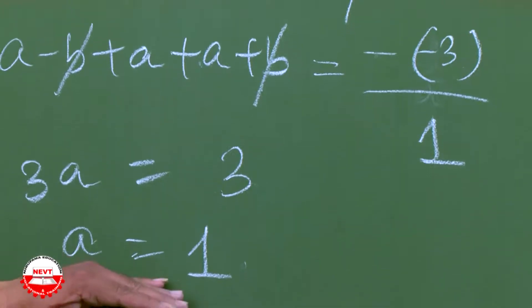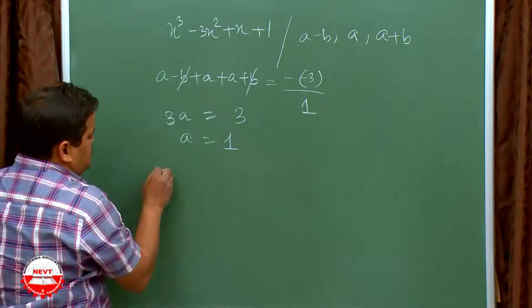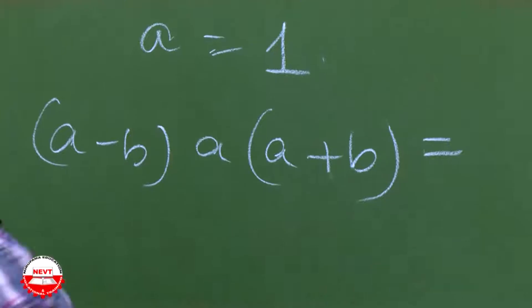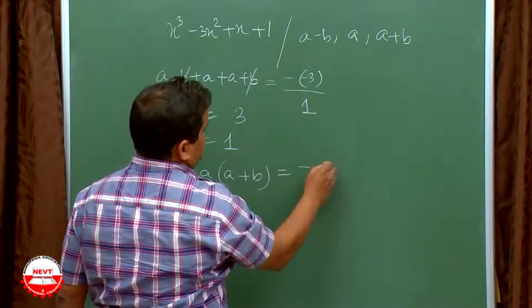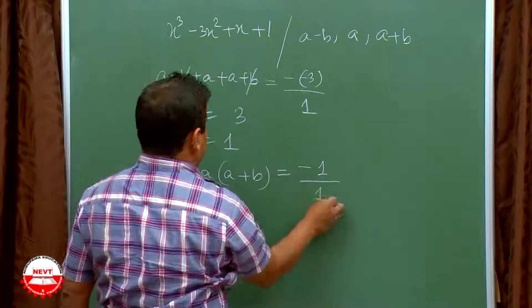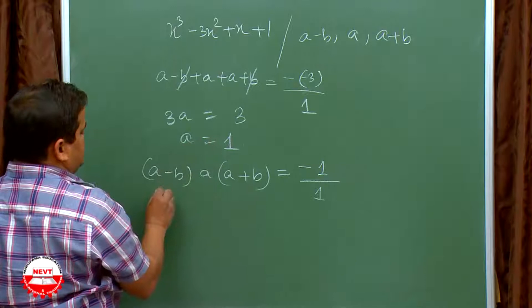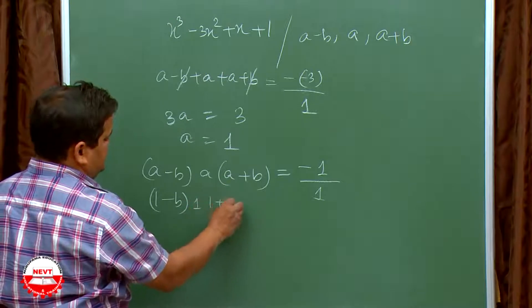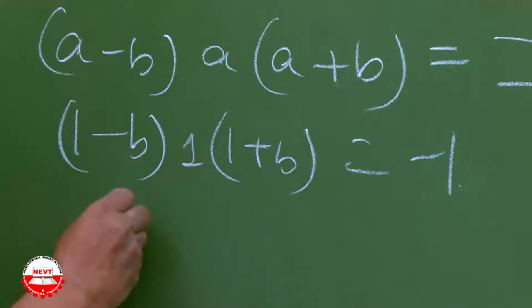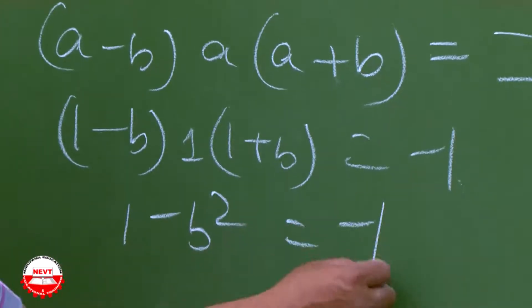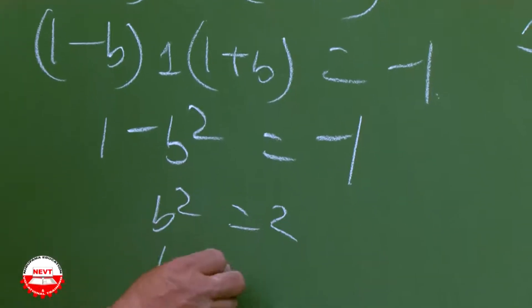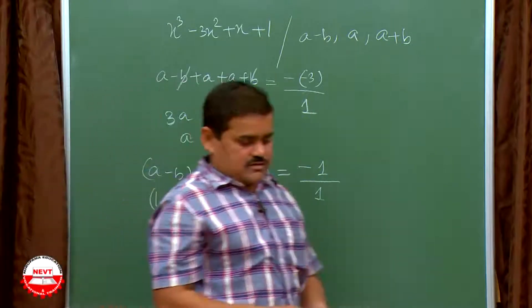You get the value of a as 1. Now product of zeros: (a minus b) into a into (a plus b) equals minus d by a. Minus d means minus 1, divided by a means 1. Substituting a equals 1: (1 minus b) into 1 into (1 plus b) equals minus 1, so 1 minus b squared equals minus 1, giving b squared equals 2, or b equals plus minus root 2.